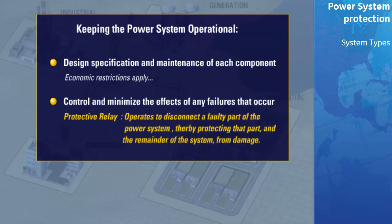The protective relay is the device which operates to disconnect a faulty part of the power system, thereby protecting that part and the remainder of the system from damage.